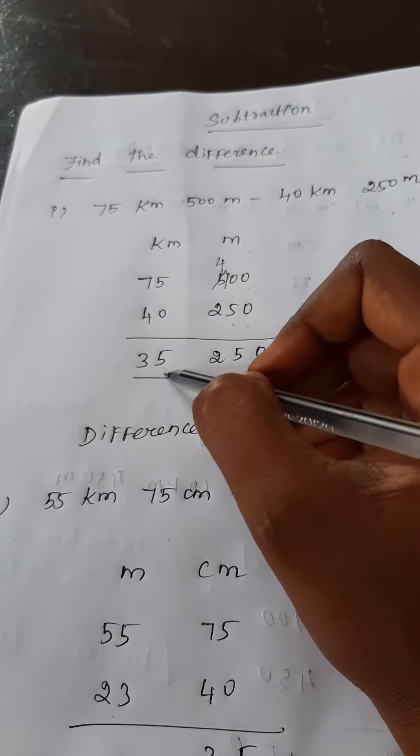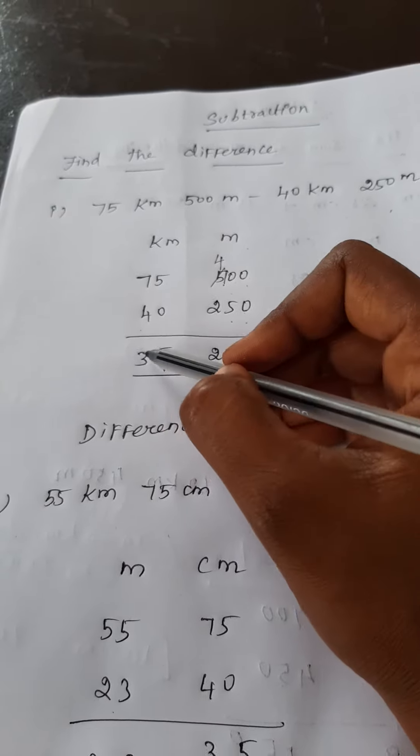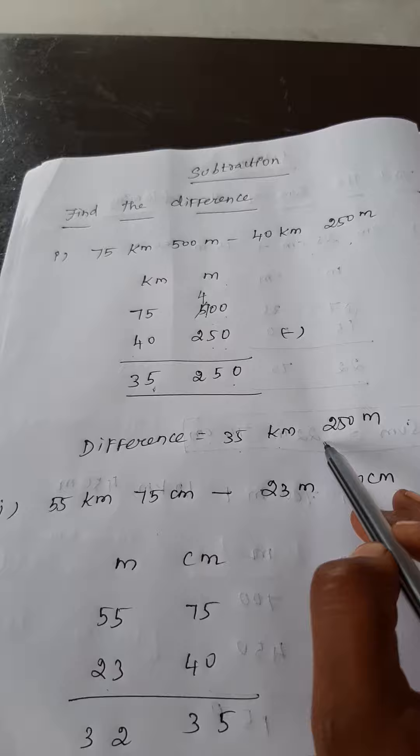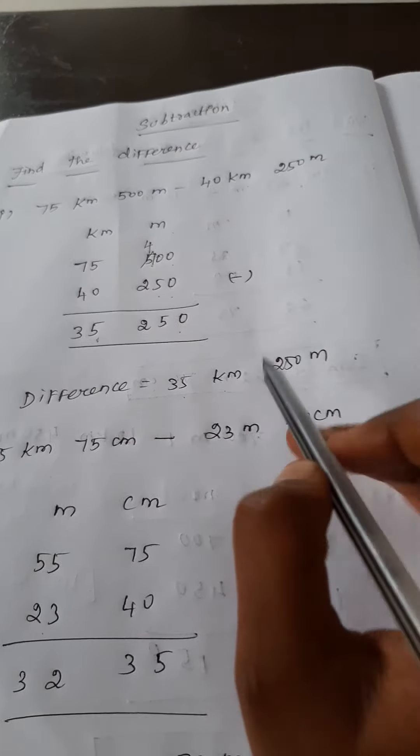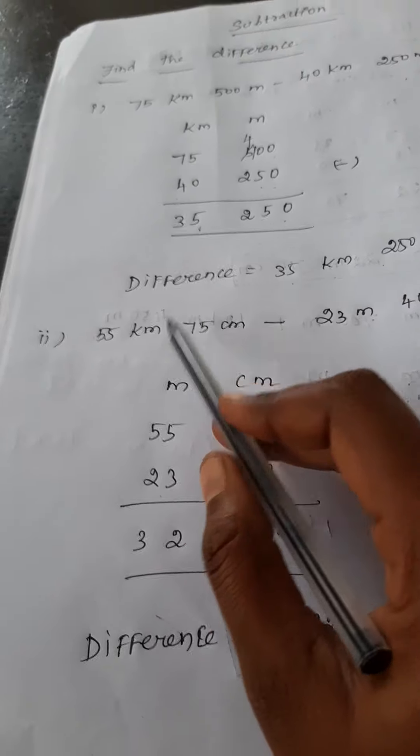Here five minus zero. Which is a big number? Five is a big number. So it's nothing but so five we can write here itself. Seven minus four, what is the value? Three. So the difference is 35 kilometer 250 meter.